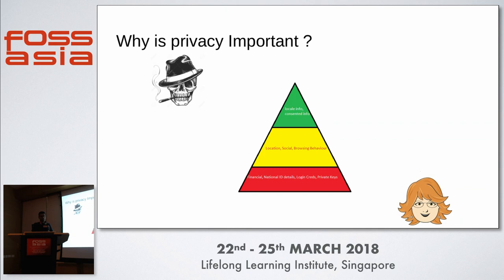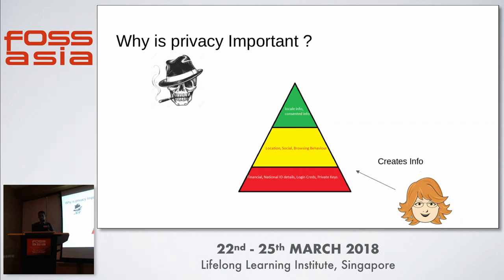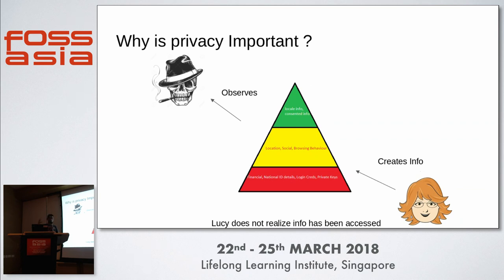Privacy is important because an adversary has more information about you than you know yourself. Take this entity I call Lucy — she writes data into the web. The adversary can read or observe this data, but Lucy has no idea what info has been accessed. There's no record, no audit. At the end of the day, the adversary knows more about this particular person than any of us know. We have no idea how much information we've already leaked into the world.